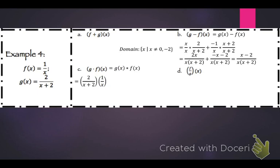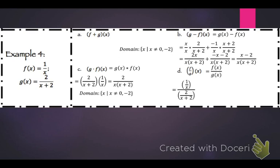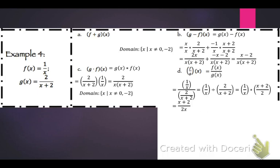For g of x times f of x, we have 2 over x plus 2 times 1 over x, which is 2 over x times x plus 2. The domain is the same: x such that x cannot equal 0 or negative 2. For f over g, we have 1 over x divided by 2 over x plus 2. Flipping that gives x plus 2 over 2x, and the domain is x such that x cannot equal 0.